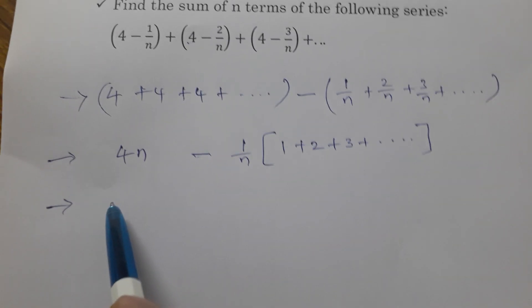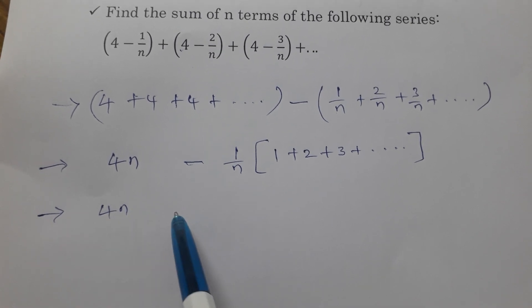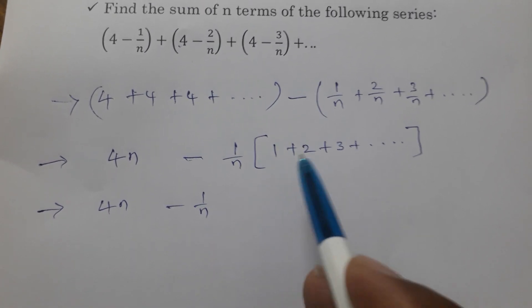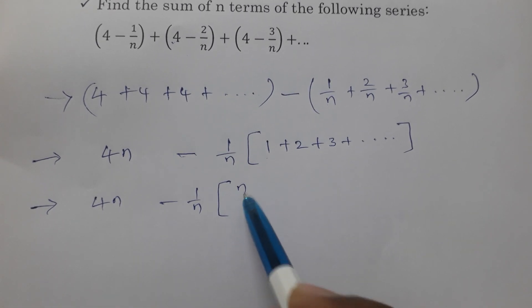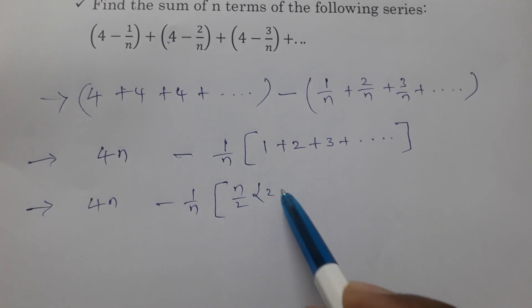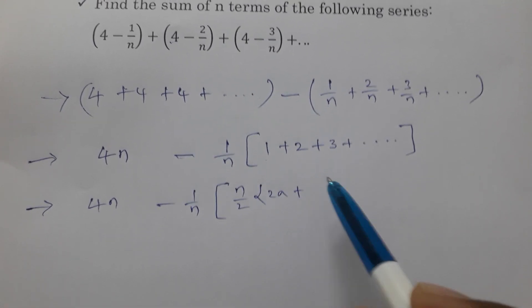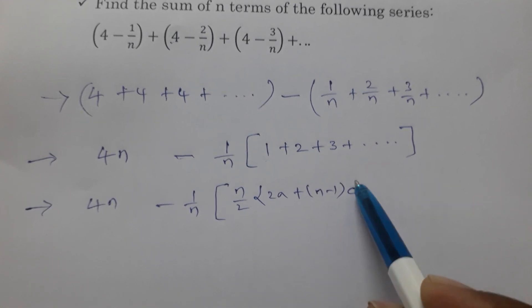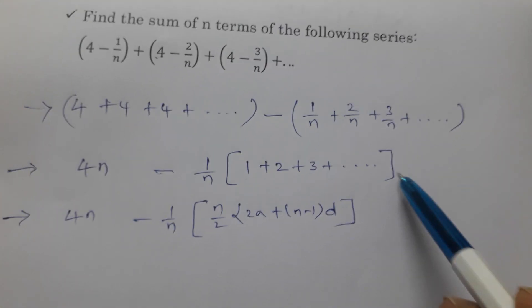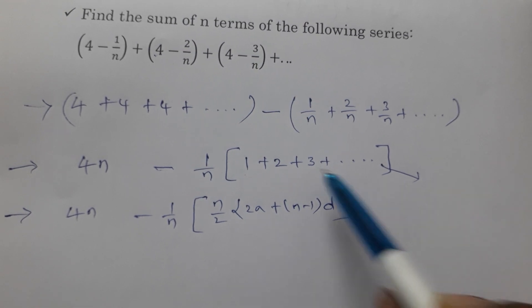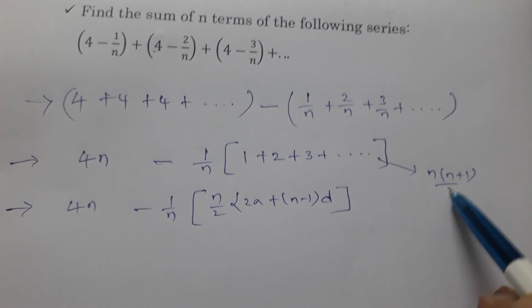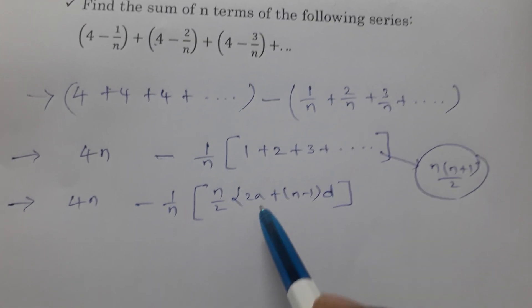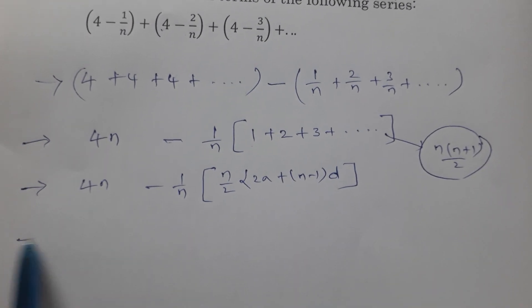So we have 4n minus (1/n) times the sum. Here you can use the Sn formula: n/2 into (2a + (n-1)d), or if you know it directly, the sum of n natural numbers is n(n+1)/2. You can write it either way or solve with the formula.